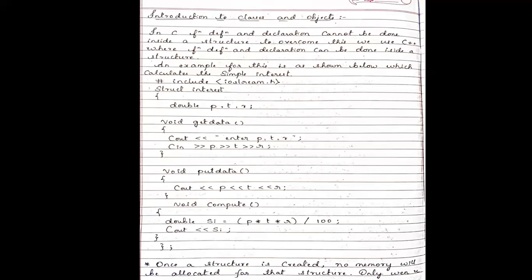The function 'get_data' is used to get input from the user — principal amount, time, and rate of interest. The return type is void. Using cout with the insertion operator, we prompt the user and read the values. The 'put_data' function displays the input values using cout. The 'compute' function calculates and displays the simple interest.